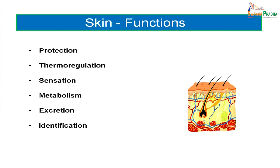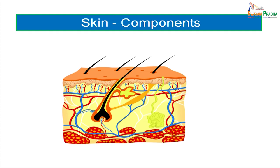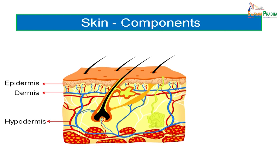Moving on to the structure of the skin. The first layer is the epidermis — the outermost layer, predominantly cellular with very little intercellular substance. The next layer is the dermis — a predominantly connective tissue layer made up of collagen, elastic, and reticular fibers, plus all other components of regular connective tissue. Beneath these two primary layers, we have the hypodermis, commonly referred to as the subcutaneous region, which can also be synonymously used as the superficial fascia. Hypodermis, subcutaneous region, and superficial fascia almost all mean the same — they are present beneath the skin.